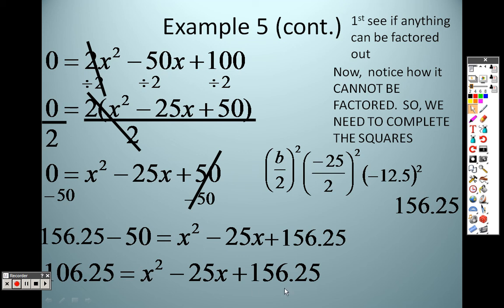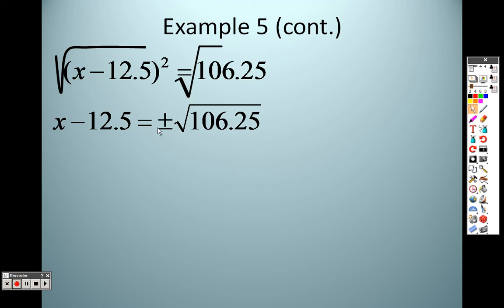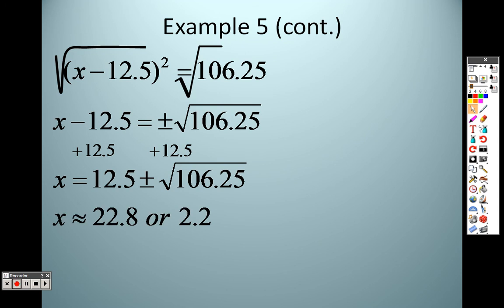Now, no problem, except if I said, hey, can you factor that for me? You'd go, I don't know how to factor that. Well, that's why whatever is inside the parentheses is your factor. So since that's your factor, I know that it's x minus 12.5 on both sides squared. And I know what the other side equals. So all I've got to do is square root each of these. So I end up getting x minus 12.5 equals plus or minus the square root of 106.25. I add 12.5 to both sides, so I get 12.5 plus or minus the square root of 106.25, and I'm getting 22.8 or 2.2 as my answer.